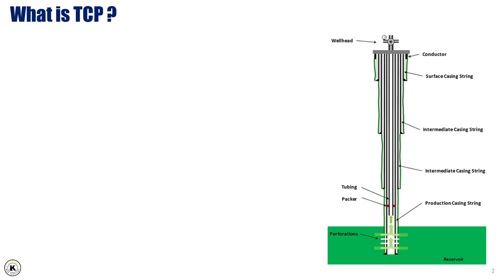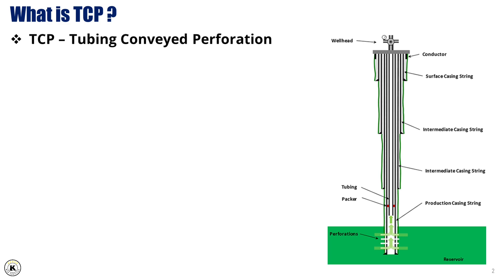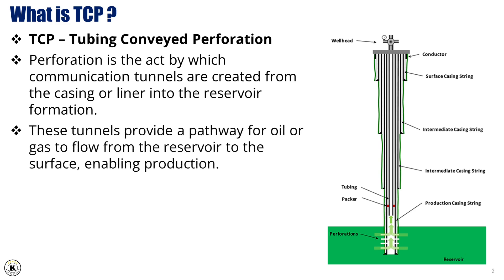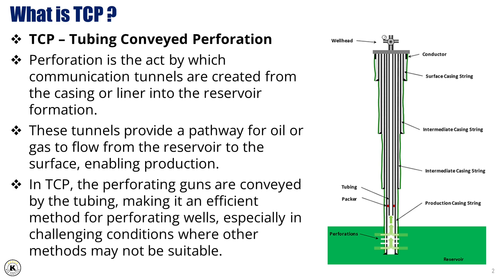What is TCP? TCP — Tubing Conveyed Perforation — is the process of creating communication tunnels from the casing or liner into the reservoir formation. These tunnels provide a pathway for oil or gas to flow from the reservoir to the surface, enabling production. In TCP, the perforating guns are conveyed by the tubing, making it an efficient method for perforating wells, especially in challenging conditions where other methods may not be suitable.